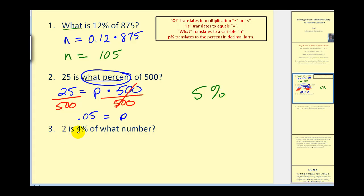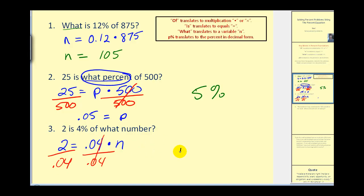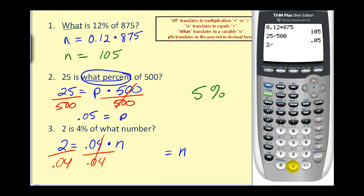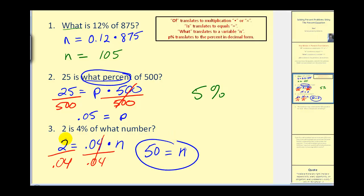Number three: two is four percent of what number? We write 2 equals 0.04 times n. To solve for n, we divide both sides by 0.04, giving us n equals 2 divided by 0.04, which equals 50. Let's see if that makes sense: two is four percent of fifty. It does make sense that two is a small percentage of this larger number fifty.